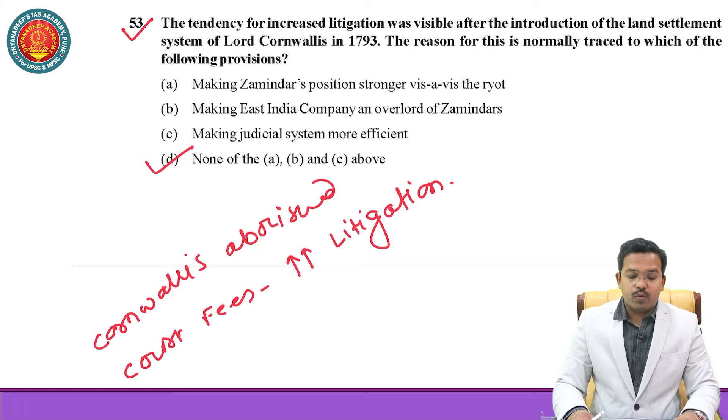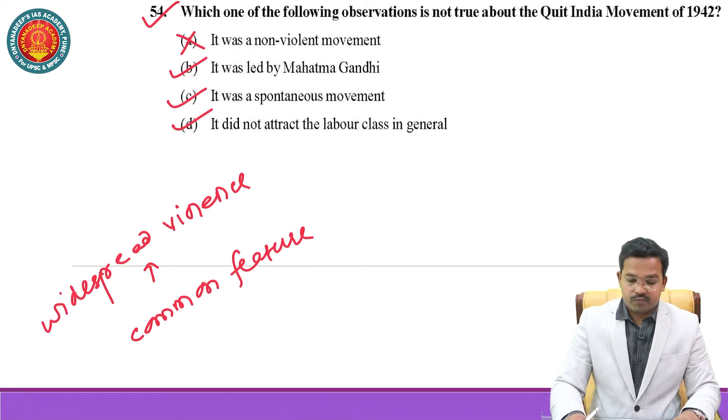The correct option is D — Cornwallis abolished court fees, which led to increased litigation. Then question number 54.